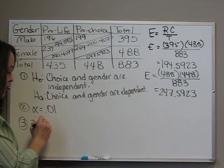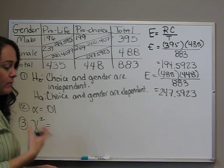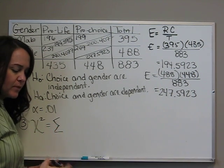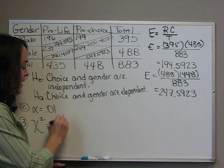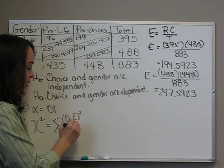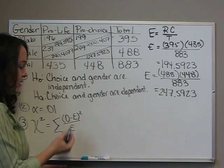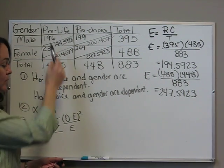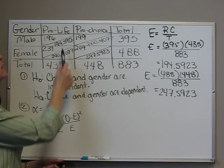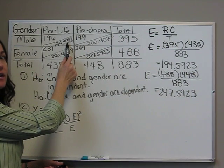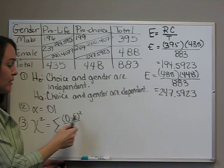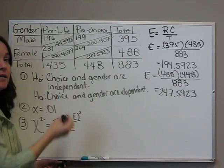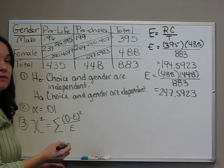Step 3 is our chi-squared test value. Remember, just like with the goodness of fit, we find chi-squared by saying O minus E-squared divided by E. O is the observed value, 196 for example. E is the expected, 194.5923. Then we subtract those, square it, and then divide by our E again, 194.5923.